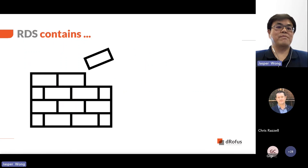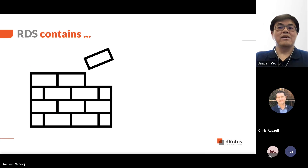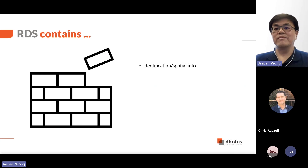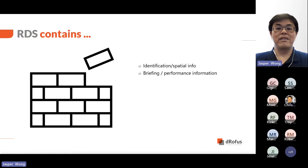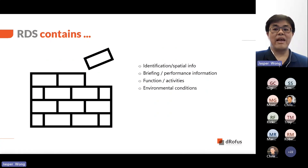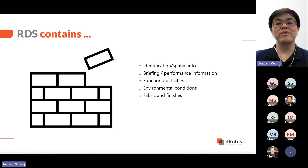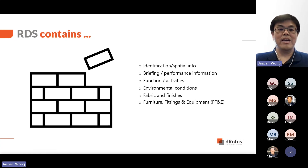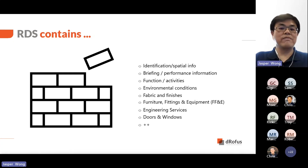We'll do a quick recap of what a Room Data Sheet is. It contains many categories of information: general room information such as a room name and room number to locate where it is on a project, briefing data such as a target area and occupancy, and describing the purpose and usage of the room. It also includes stakeholder-specific requirements such as environmental conditions, HVACs, and lighting. It also contains details of building elements such as floors, walls, ceilings, and what goes into the rooms — your FF&E, engineering services, and many others. In short, it contains a snapshot of information about the room.